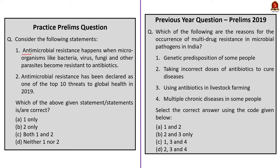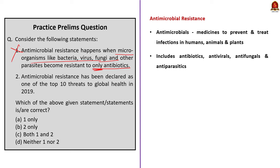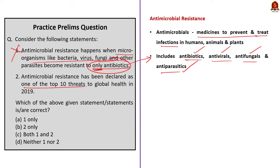An MCQ about antimicrobial resistance: Statement 1 — antimicrobial resistance happens when microorganisms become resistant only to antibiotics — is incorrect. Antimicrobials is a broad term including antibiotics, antivirals, antifungals, and antiparasitics, so antimicrobial resistance includes resistance to all of these, not just antibiotics. Statement 2 — antimicrobial resistance has been declared one of the top 10 threats to global health in 2019 — is correct; the WHO released this list in 2019. The correct answer is option B: two only.